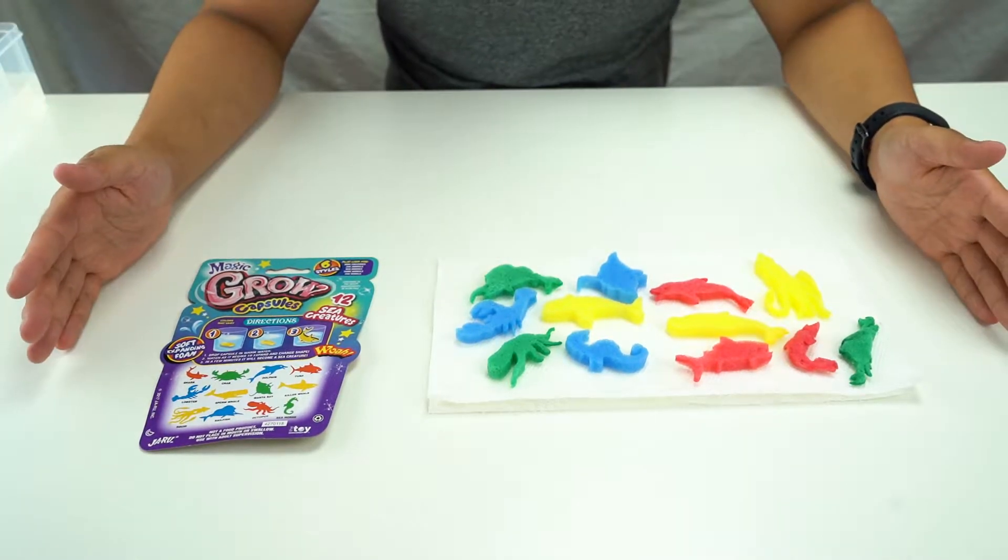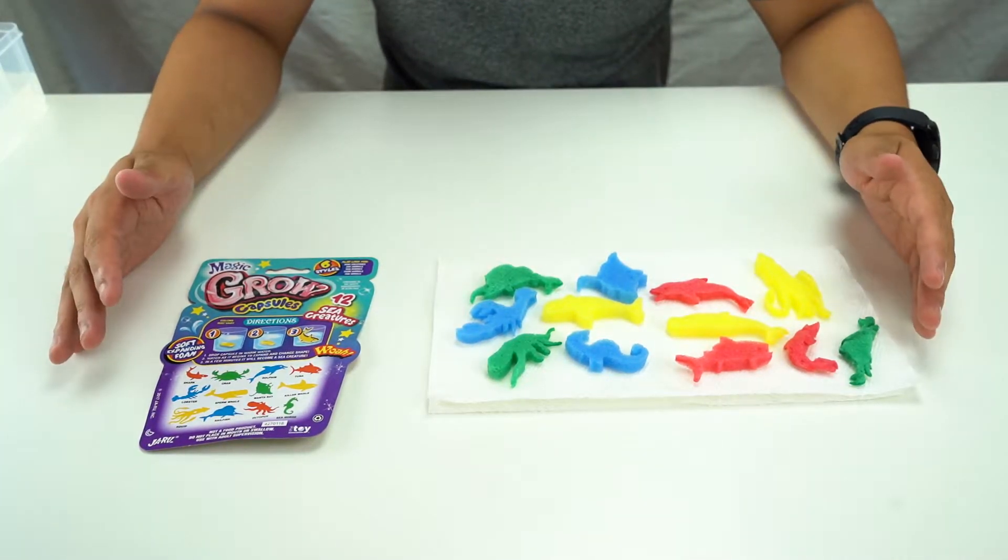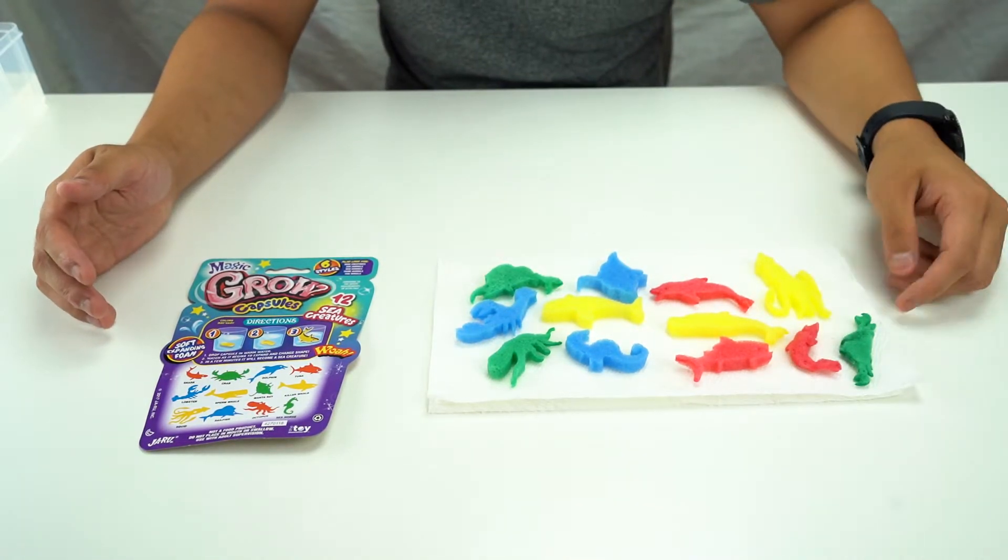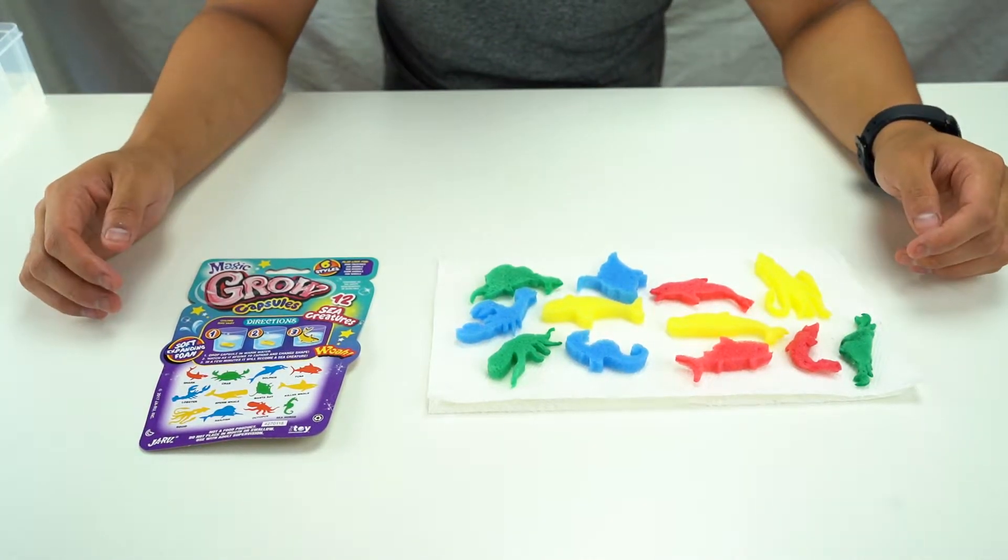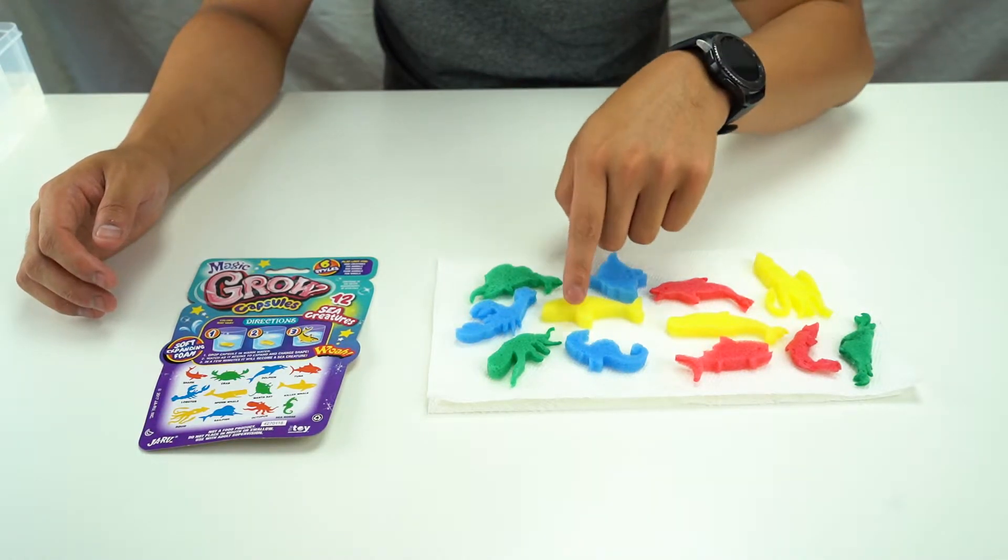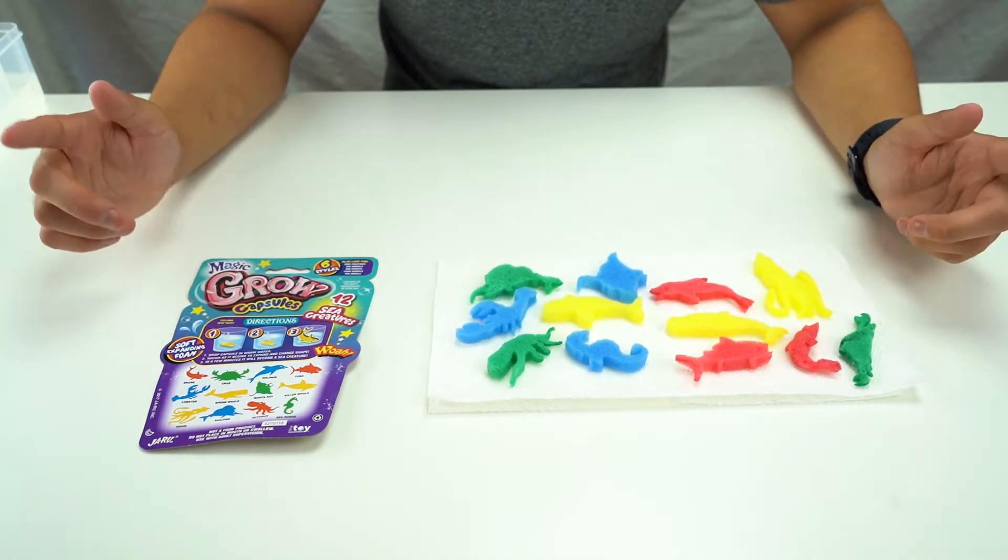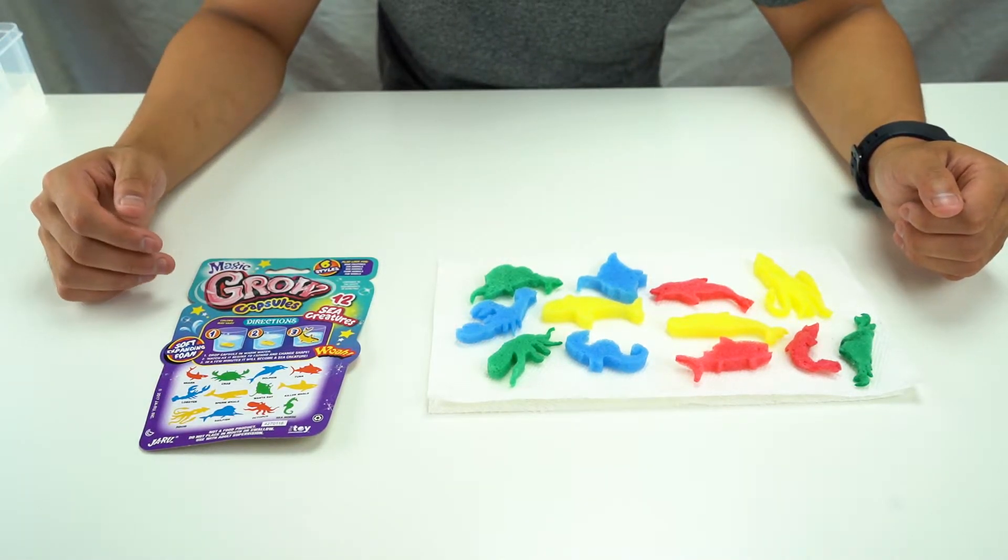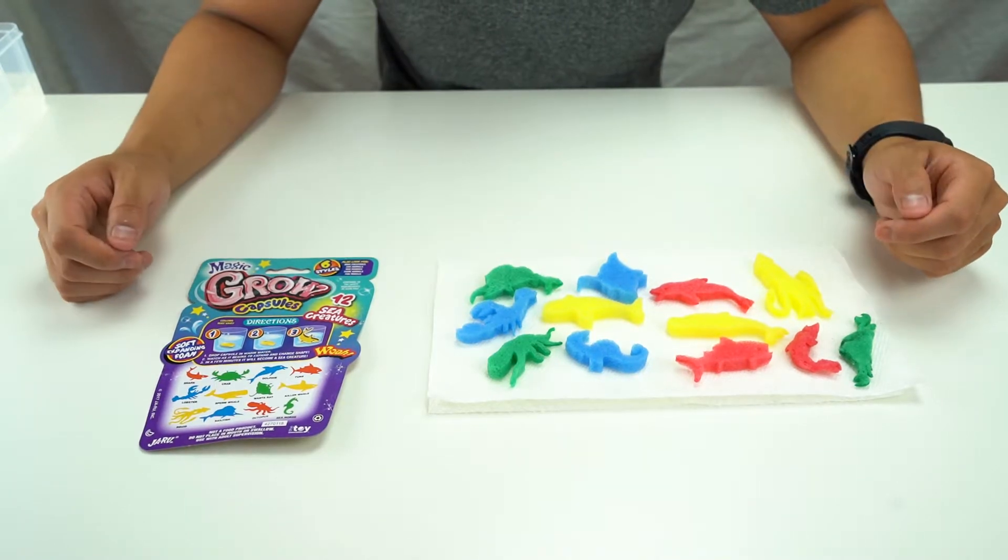All right, well this was Magic Grow capsule sea creatures. This is the ones that we were able to get - two of them we had a little trouble growing but that's not that big of a deal. A lot of these other ones look pretty nice. All right, well if you liked that video guys, stay tuned. We're going to do the rest of the styles of Magic Grow capsules and we'll see you in the next video.